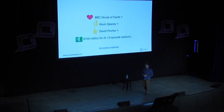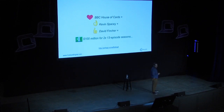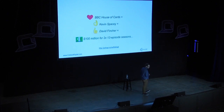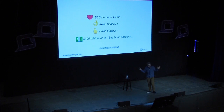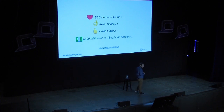Something they also do is rely heavily on their own data. They noticed that people who liked the original BBC version of House of Cards also really liked Kevin Spacey and director David Fincher. So they did a cohort analysis and decided to invest a hundred million dollars in the first two seasons. They did that because they saw what their users liked — it was a huge success, and they continued to produce multiple other seasons.